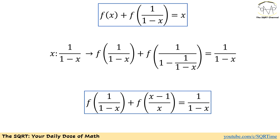Let's replace whatever we have for x with 1/(1-x). If we do this, the first term is going to be f(1/(1-x)). The second expression is f(1/(1 - (1/(1-x)))), and the right-hand side becomes 1/(1-x). After some algebraic simplifications, the second term becomes f((x-1)/x), and we keep the right-hand side as is.